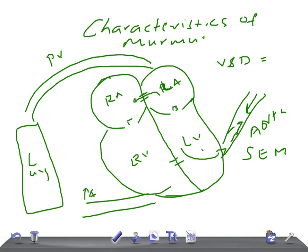Pulmonary stenosis also produces a systolic ejection murmur, but its position is over the upper part of the left chest anteriorly, conducted to the back, and it is usually preceded by an ejection click. To contrast: aortic stenosis murmur is at the right upper sternal border radiating to the neck, while pulmonary stenosis is at the upper left chest anteriorly conducted to the back.